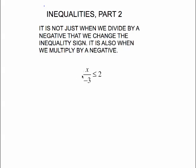So here's one that says x divided by negative 3. If we're going to undo this division of negative 3 we need to do the opposite which is multiply by negative 3.